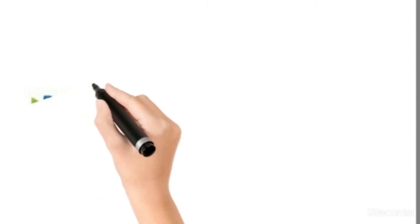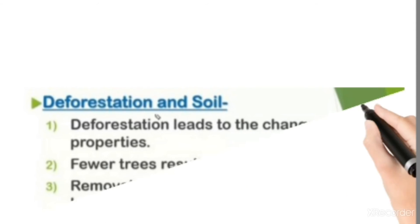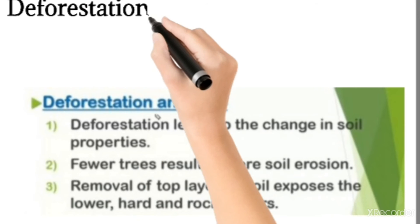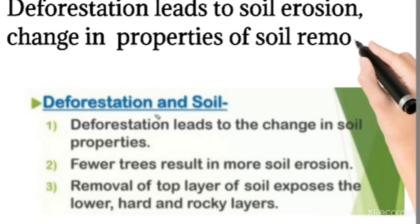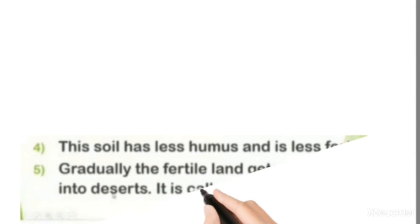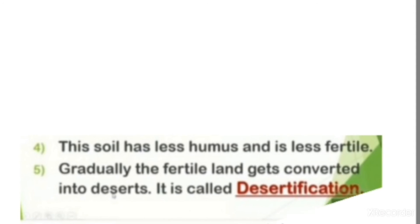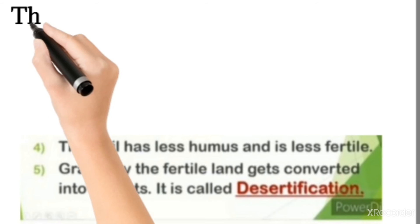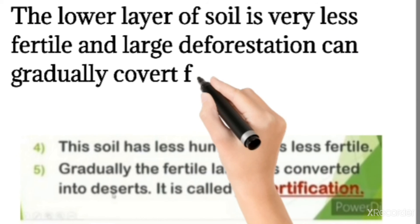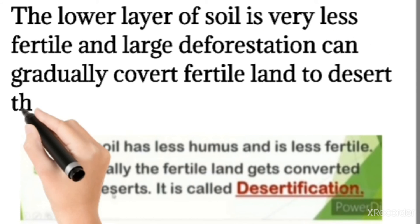Deforestation leads to soil erosion, change in properties of soil, and removal of topsoil. The soil has less humus and is less fertile. Gradually, the fertile land gets converted into desert. This process is called desertification.